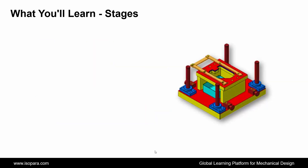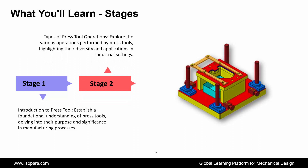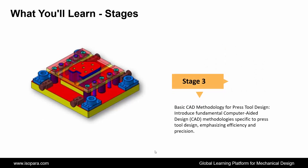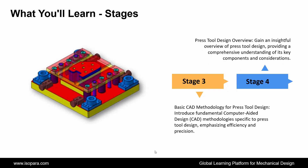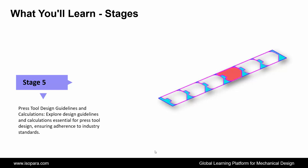Now we see the stages of what you will learn in this course. First is Introduction to press tool — establish a foundational understanding of press tools, delving into their purpose and significance in manufacturing processes. Second is Types of press tool operations — explore the various operations performed by press tools, highlighting their diversity and applications in industrial settings. Third is Basic CAD methodology for press tool design — introduce fundamental computer-aided design methodologies specific to press tool design, emphasizing efficiency and precision. Fourth is Press tool design overview — gain an insightful overview of press tool design, providing a comprehensive understanding of its key components and considerations. Fifth is Press tool design guidelines and calculations — explore design guidelines and calculations essential for press tool design, ensuring adherence to industry standards.